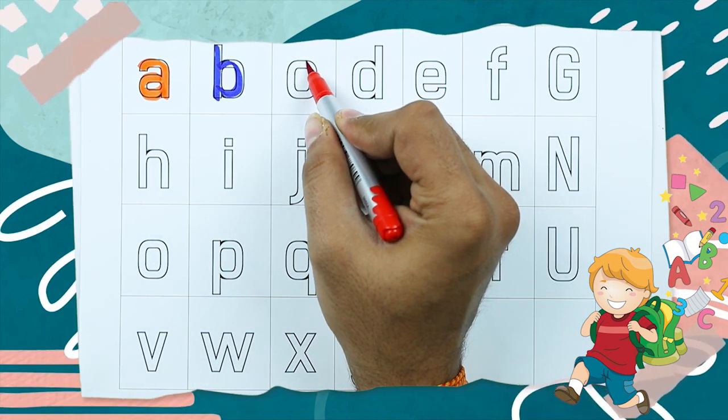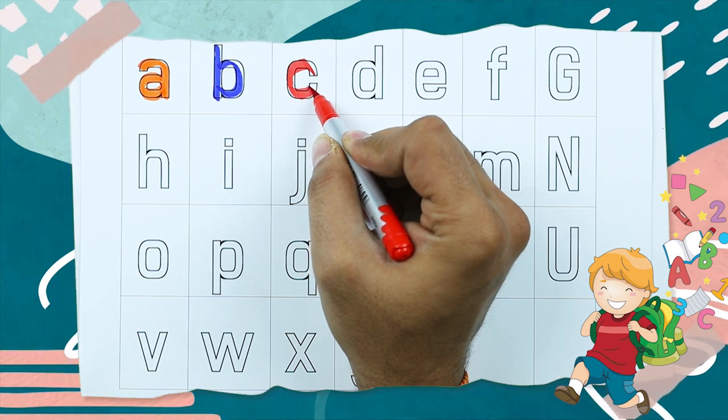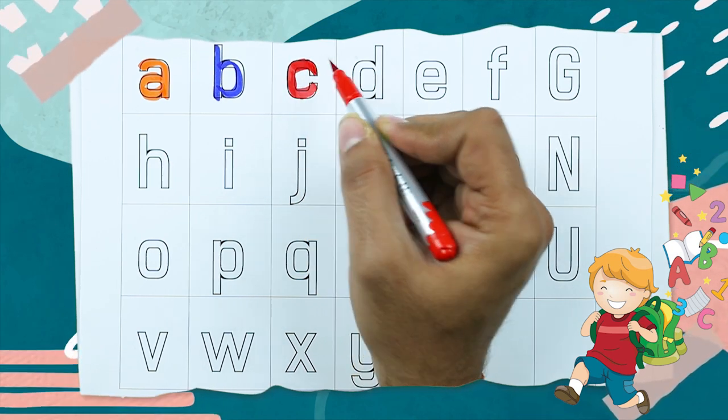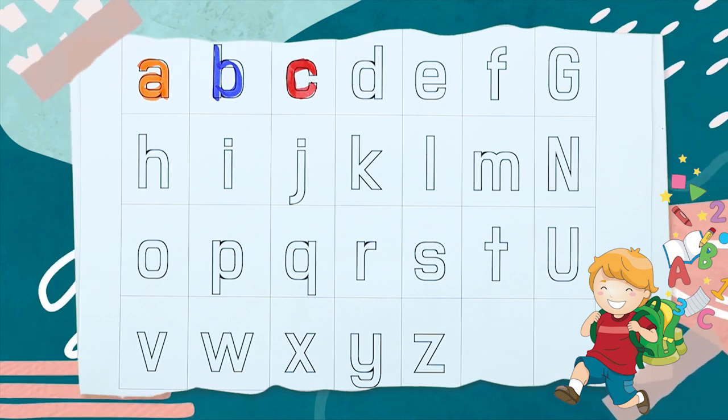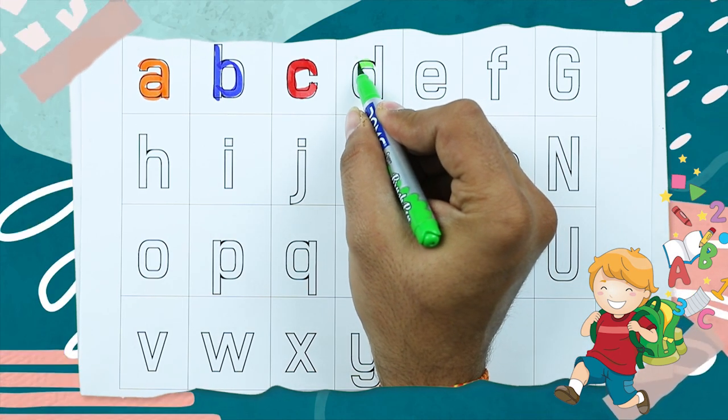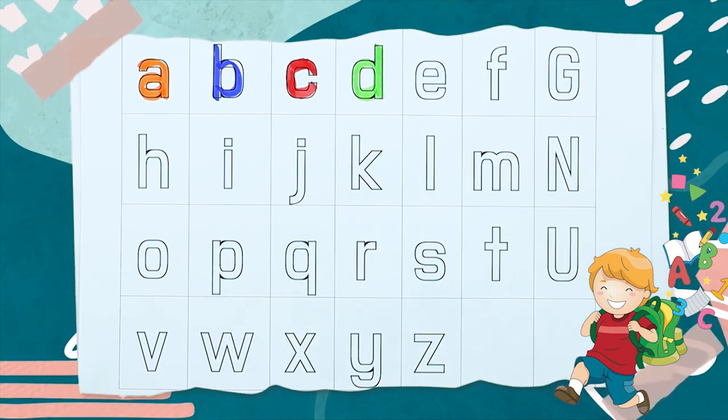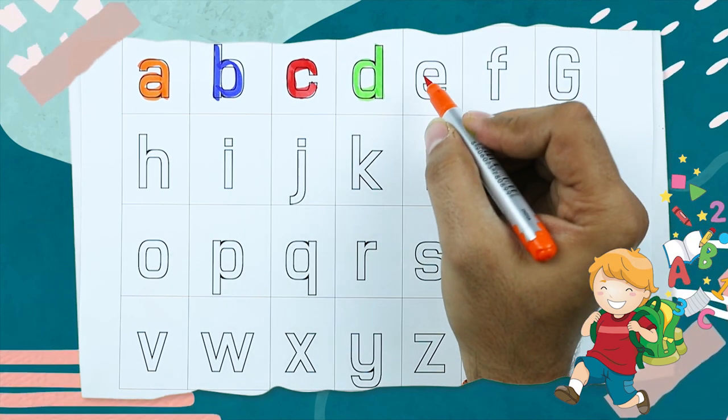C for cat, it's small c, C for cat. D, D for dog, like it's D, D for dog.